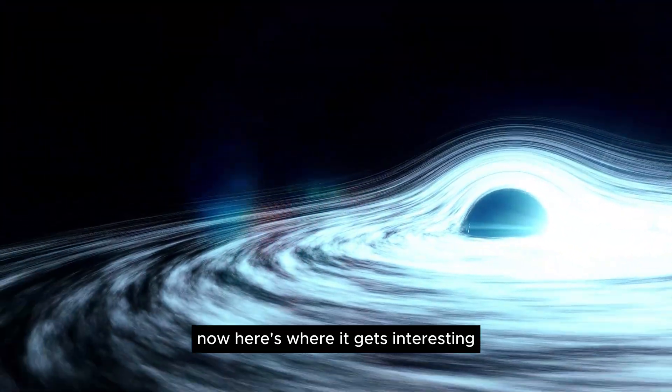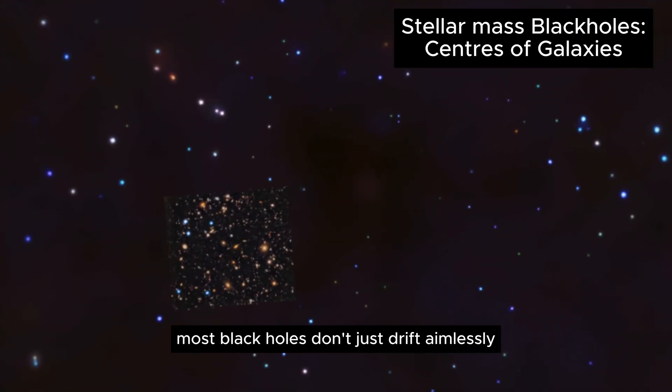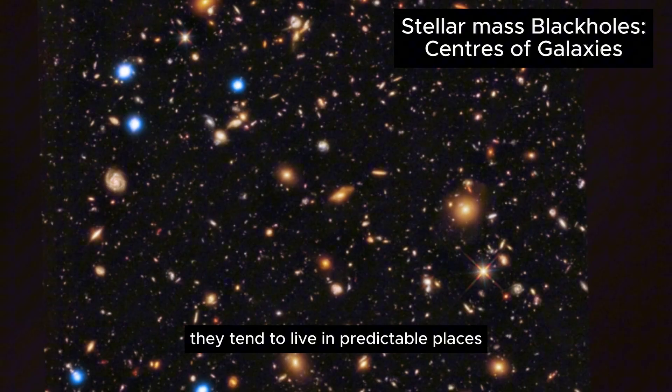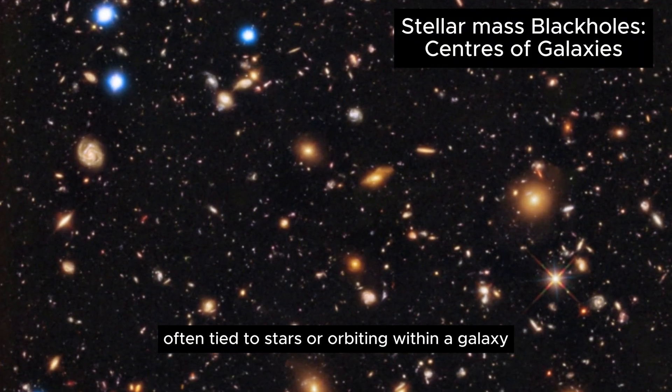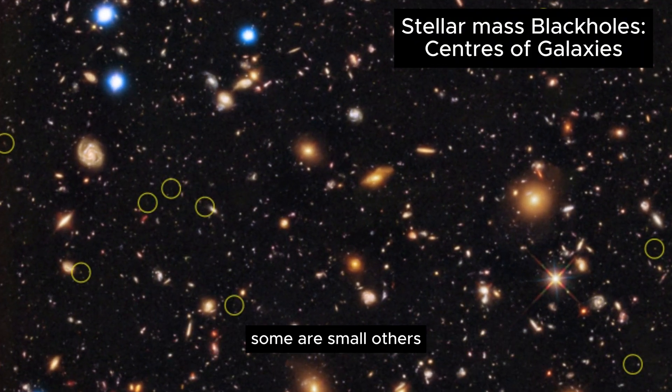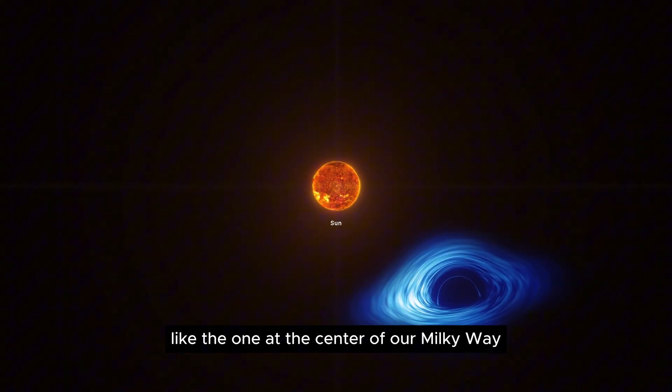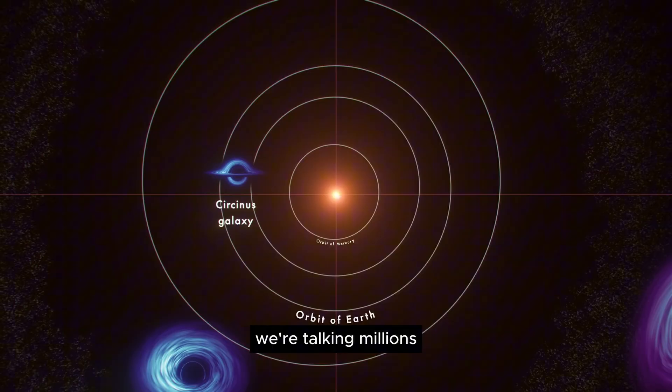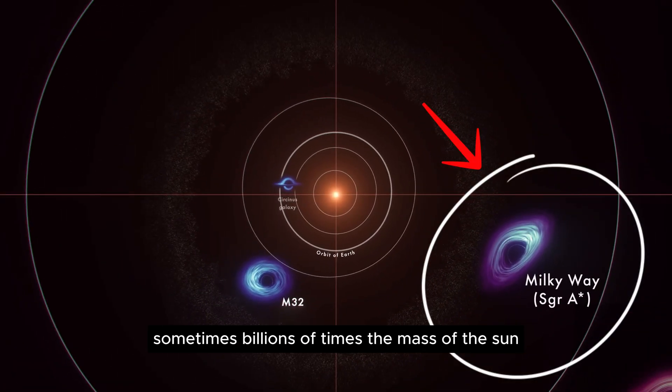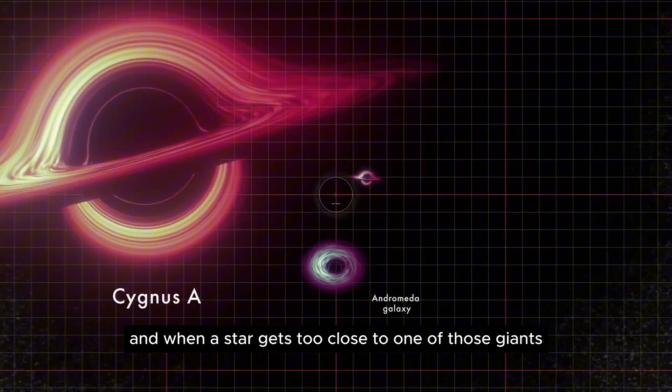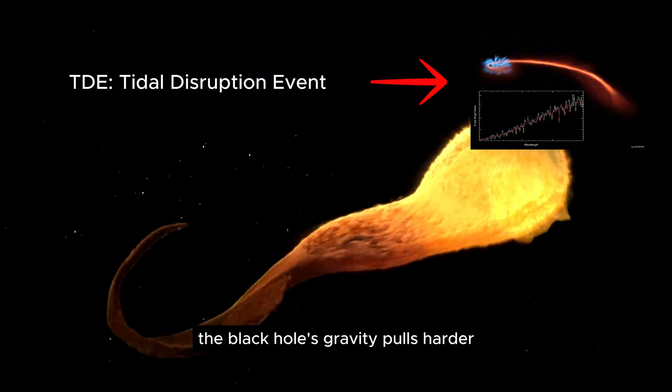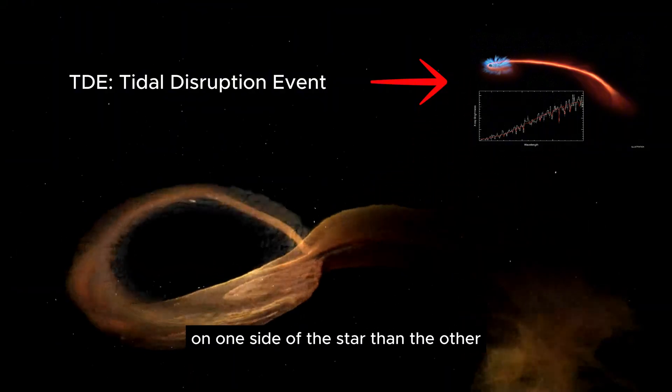Now here's where it gets interesting. Most black holes don't just drift aimlessly. They tend to live in predictable places, often tied to stars or orbiting within a galaxy. Some are small. Others, like the one at the center of our Milky Way, are supermassive. We're talking millions, sometimes billions of times the mass of the sun. And when a star gets too close to one of those giants, it dies in a very specific way. The black hole's gravity pulls harder on one side of the star than the other.